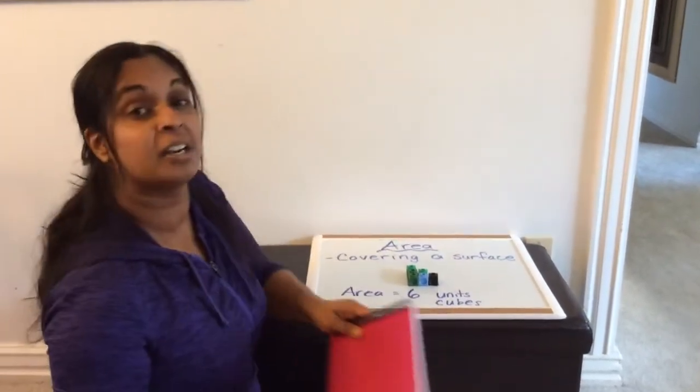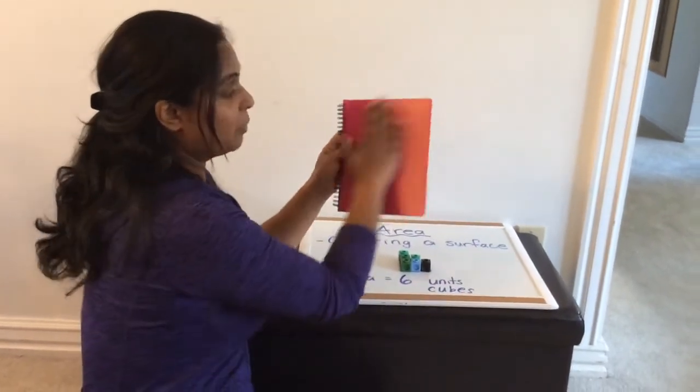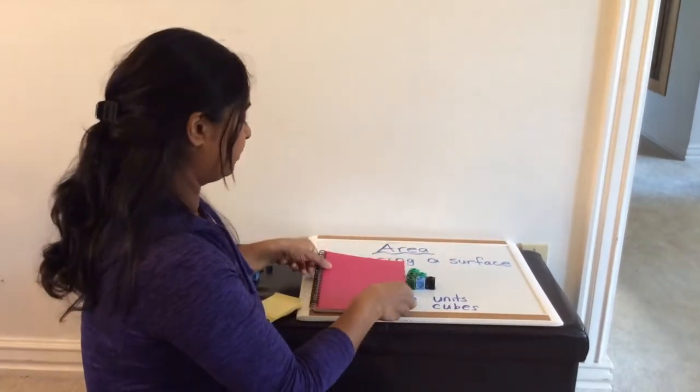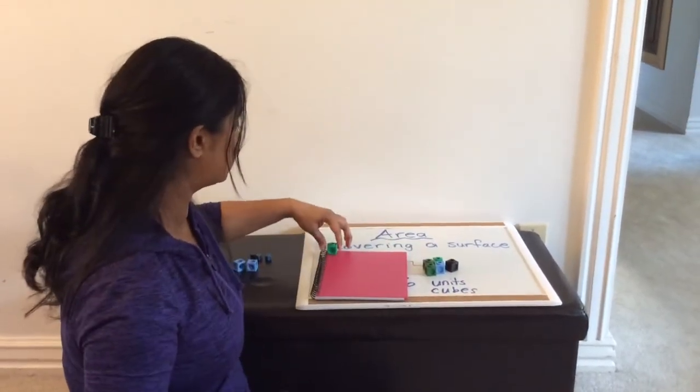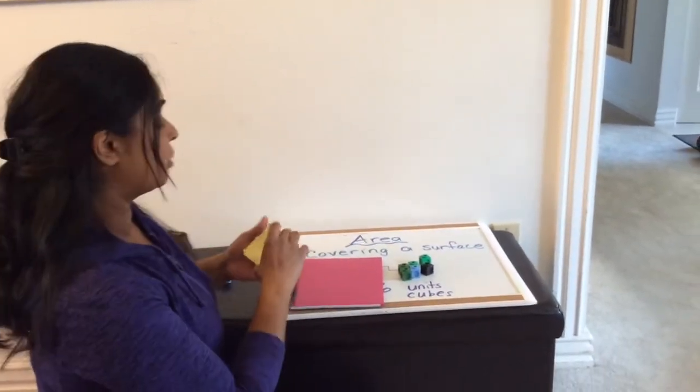Now, you'll be also moving on to other ways to cover an area. So, for example, if I want to cover the this cover of this notebook, then I can use something different. Linking cubes are a little small. It would take me a lot of linking cubes to cover that front of that notebook.